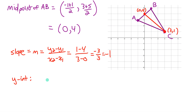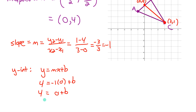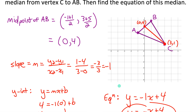To find the y-intercept, substitute the slope and a known point into y = mx + b. Using the point (0, 4): 4 = −1(0) + b, so b = 4. Since (0, 4) is already the y-intercept, b = 4. The equation of the median is y = −x + 4. That's the equation of that red line.